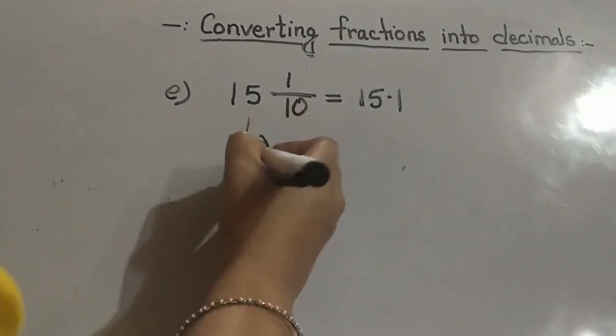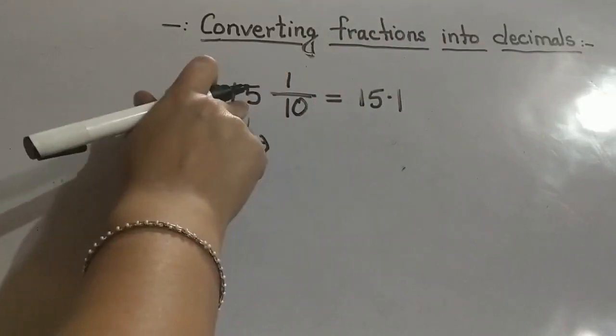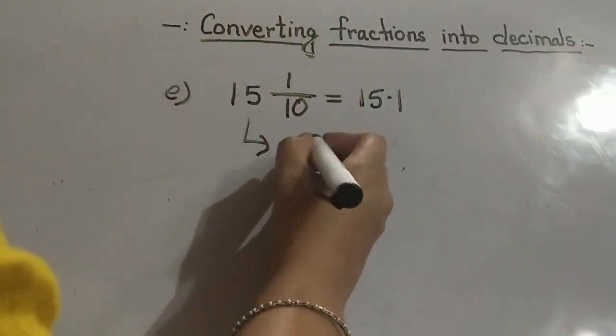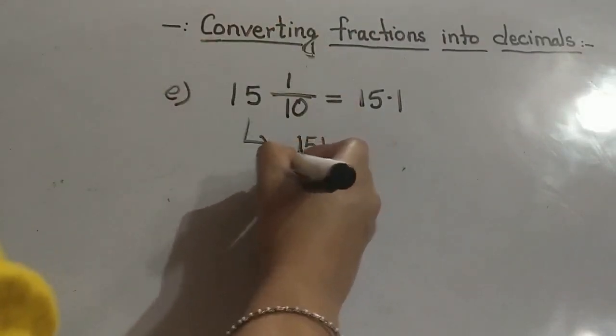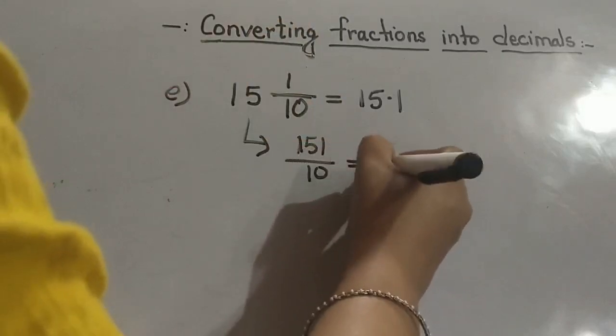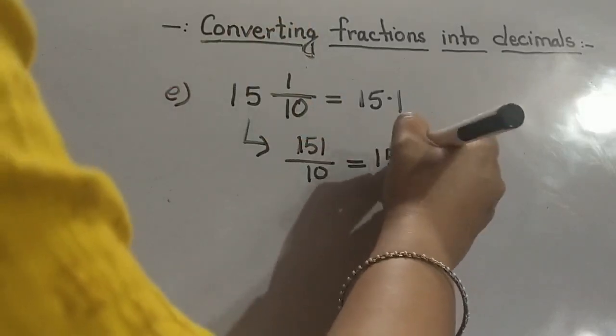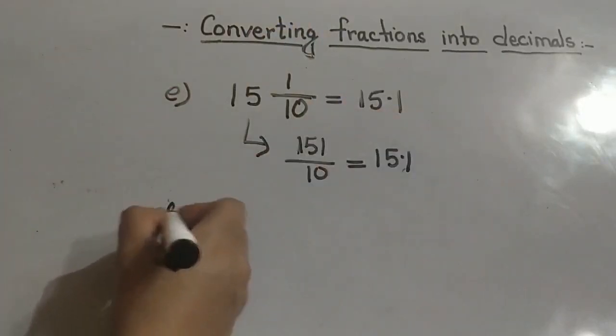Another way to do it: 10 multiplied by 15 is 150, plus 1 is 151, upon 10, so again we are getting the same answer 15.1. One more example for it.